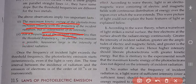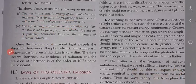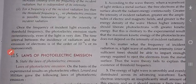For a frequency of incident radiation less than the threshold frequency, no photoelectric emission is possible, however large the intensity of incident radiation. अगर frequency threshold frequency से कम होगी, तो कोई भी electron eject नहीं होगा।